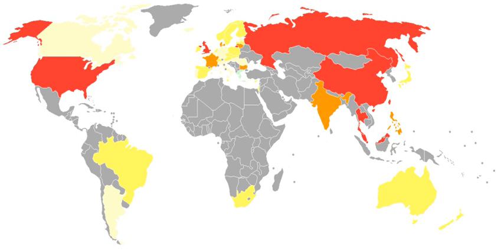The Fourth Amendment to the Constitution of the United States ensures that the right of the people to be secure in their persons, houses, papers, and effects, against unreasonable searches and seizures, shall not be violated, and no warrants shall issue, but upon probable cause, supported by oath or affirmation, and particularly describing the place to be searched, and the persons or things to be seized. The First Amendment protects the right to free assembly, broadening privacy rights.